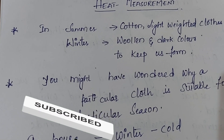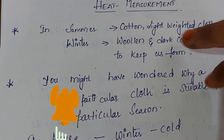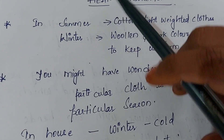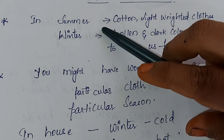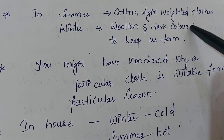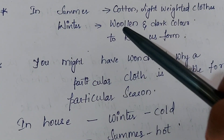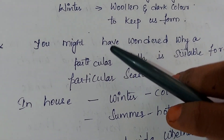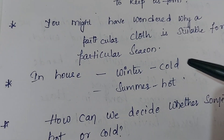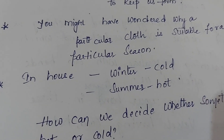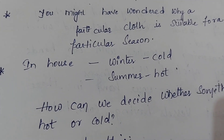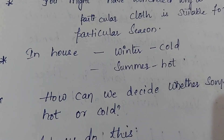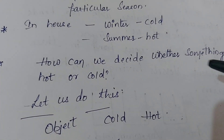Some seasons, some three months will be summer and others will be winter. In summer you feel to wear cotton, light and light-colored clothes; in winter you feel to wear woolen and dark-colored clothes. You might have wondered why only particular clothing is needed in a particular season — because winter will be cool and summer will be hot.